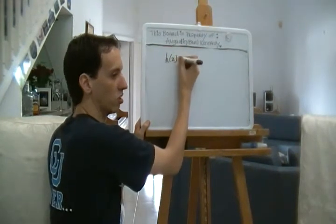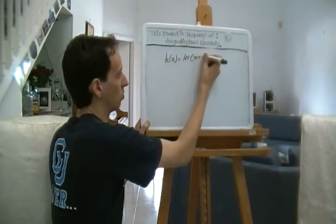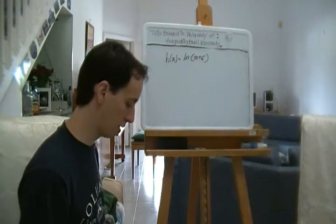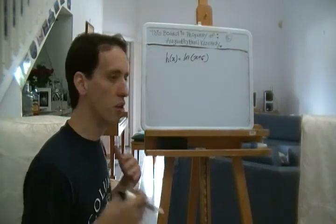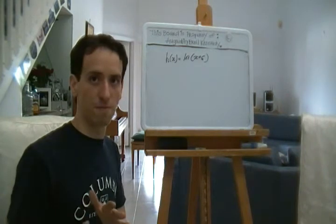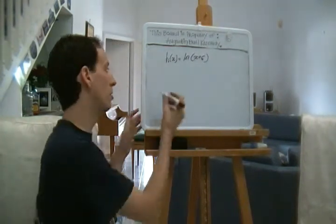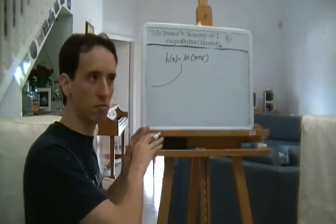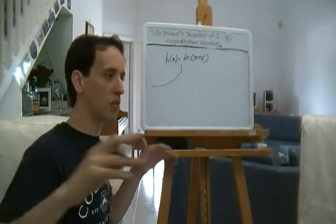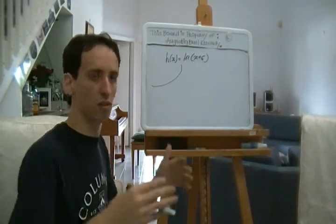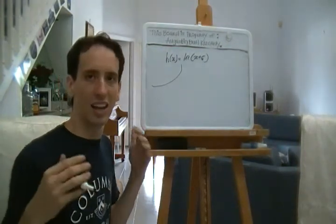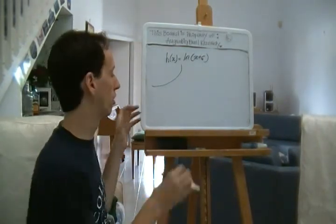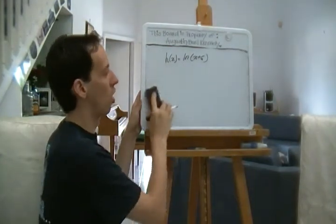h of x equals ln of x plus six. Now, if you remember what we talked about with the natural log, you'd remember that it's always positive and that it's like the exponential function. Now, you remember the exponential function goes on forever. It has a domain forever, but its y value is always positive.